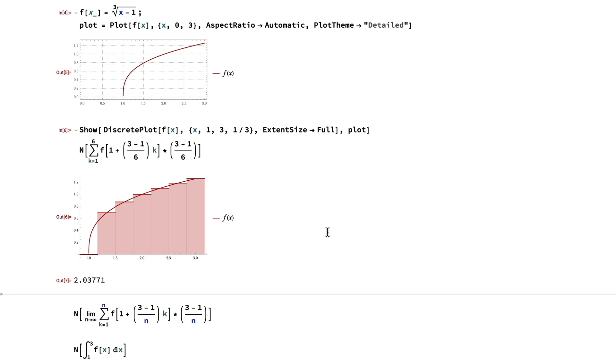Here we use the discrete plot function in the Wolfram language to create a Riemann sum for this curve. This Riemann sum is a midpoint approximation, taking rectangles a third of a unit long and setting their height equal to the height of f of x at the middle of that rectangle. Taking the sum of the volume of each of these rectangles, we get an approximation of the integral of f of x over that area, which comes out to be around 2.04.